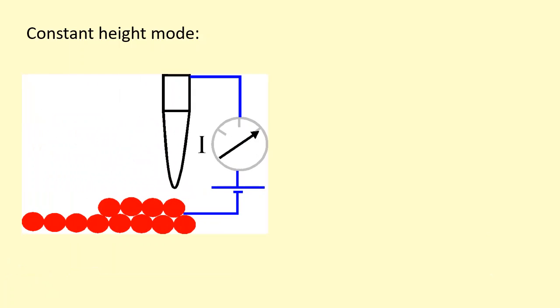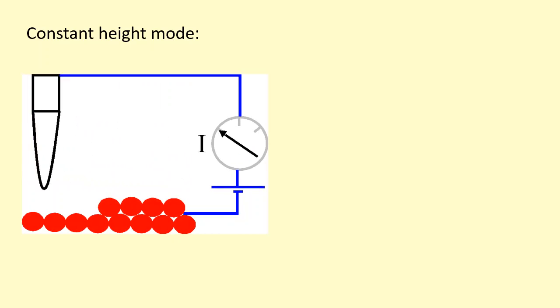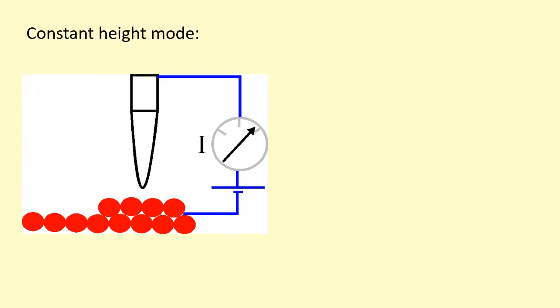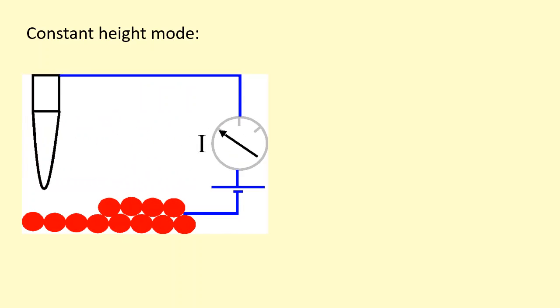The scanning tunneling microscope has two modes of function. One is called the constant height mode, where the probe tip is kept at a constant vertical height as it sweeps across the surface. The current will change as a result.